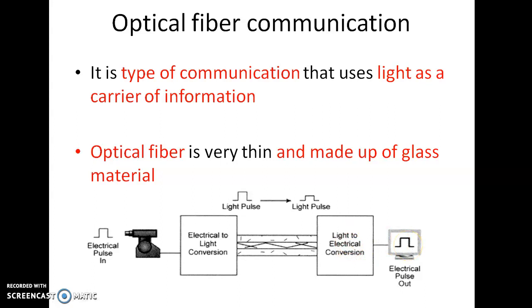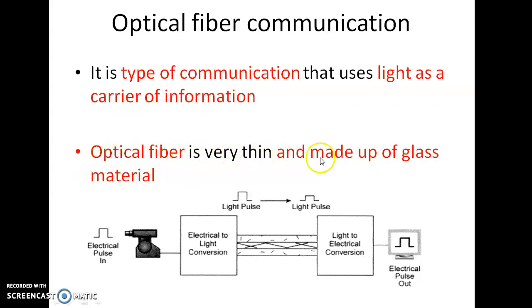At the output, we are converting the light signal back to an electrical signal. First we convert the electrical signal to an optical signal — that is, light pulses. At the receiver side, we convert light pulses back to the equivalent electrical signal, and from that we recover the original information signal. So optical fiber communication is a type of communication that uses light as a carrier of information, and optical fiber is very thin and made up of glass material.